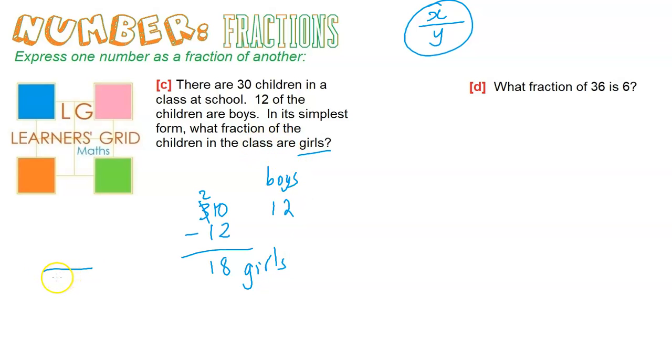What fraction of the children in the class - that's going to be 30, the total number of children - are girls, that's 18. We need to simplify. I could just halve it, but I know my times tables better than that. I could go sixes, I could go threes, I could go twos.